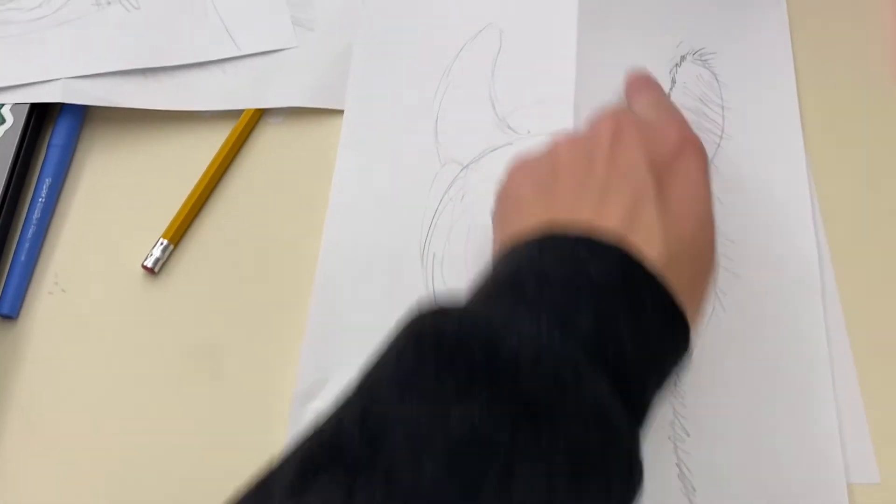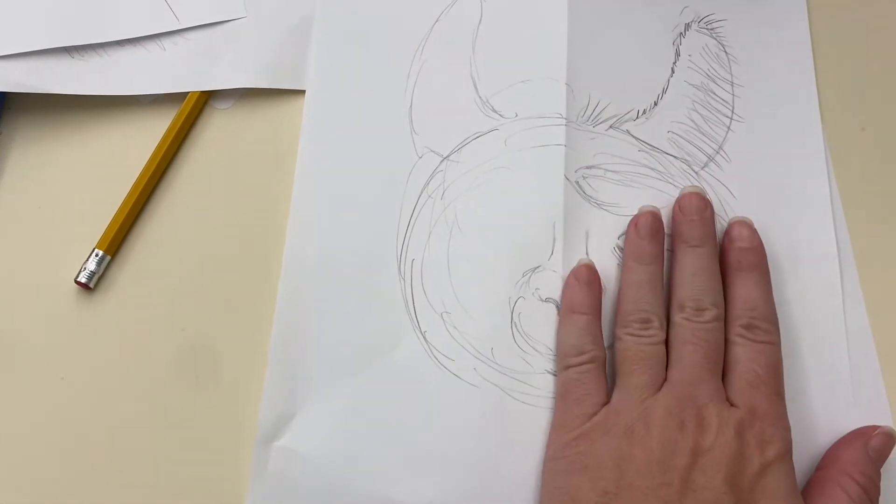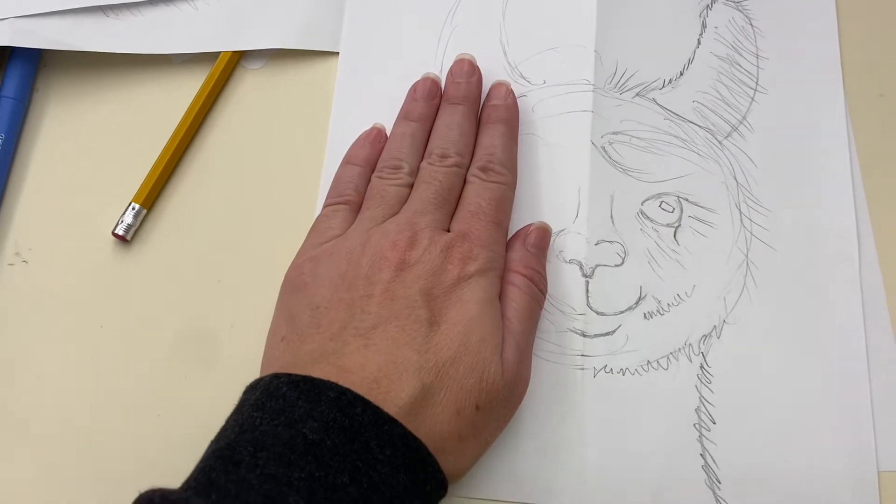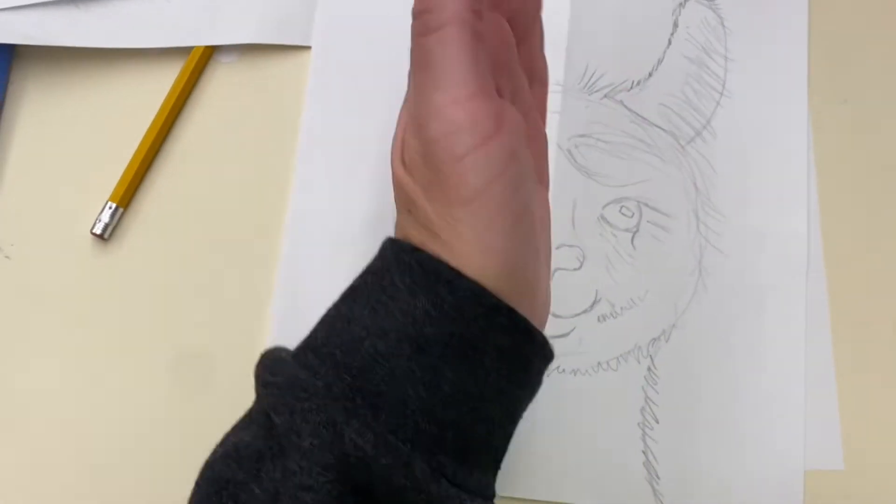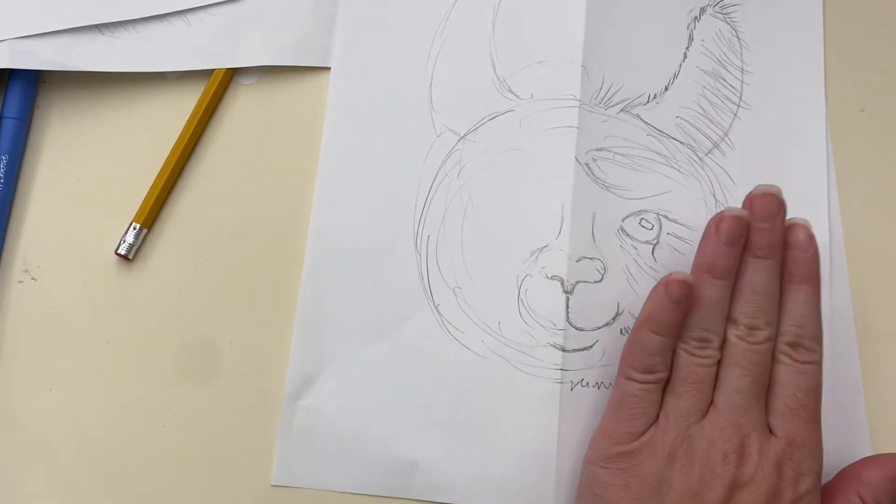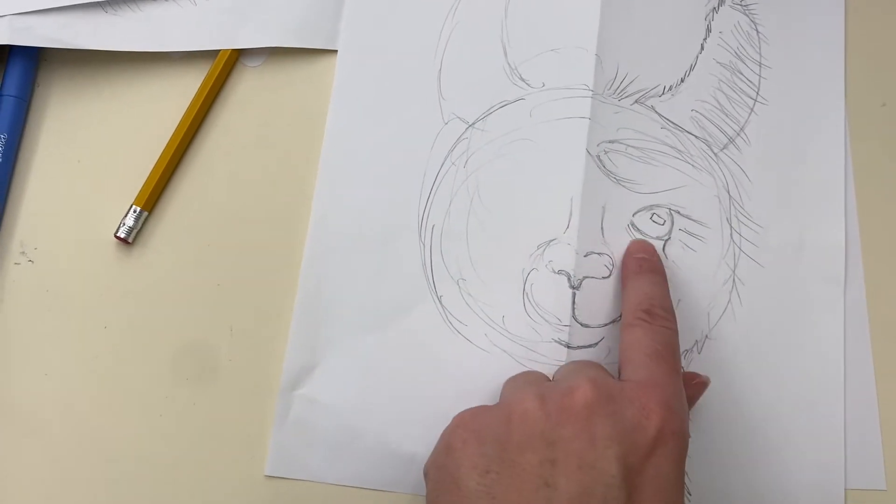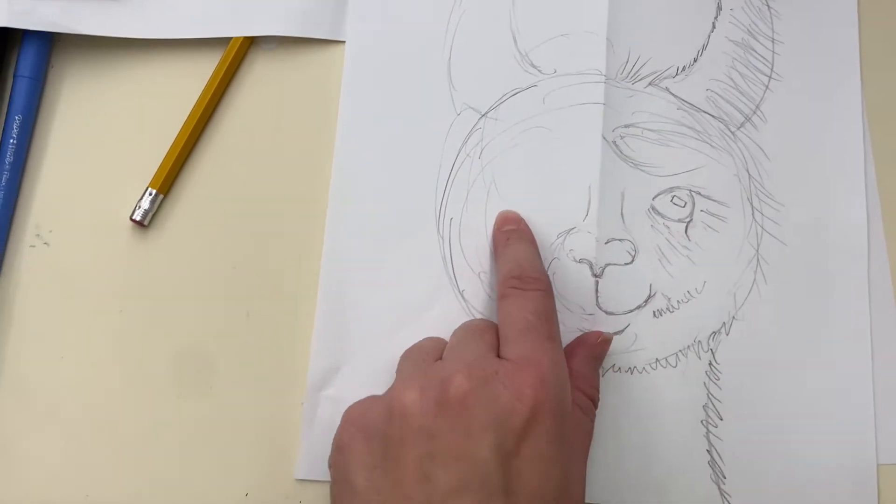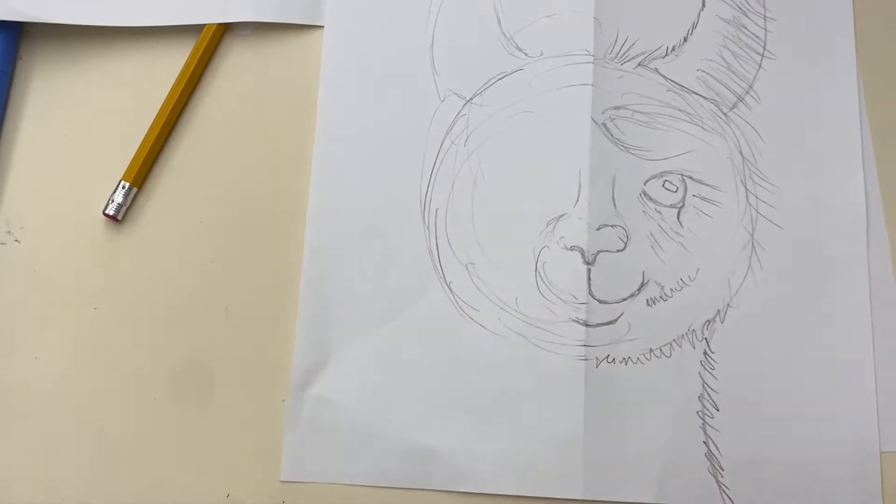You'll notice on this side of the paper I'm drawing lots of details and on this side we're not doing any details. Because it has symmetry we're gonna copy this side over here so that way you don't have to try to draw the eye the same shape, you can always trace the other side.